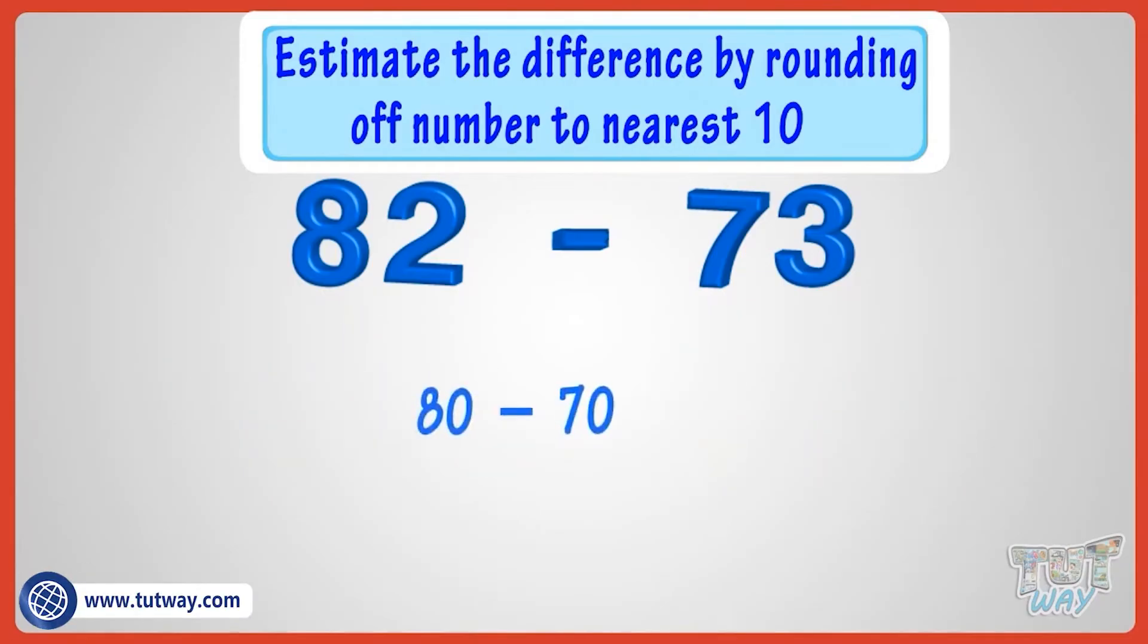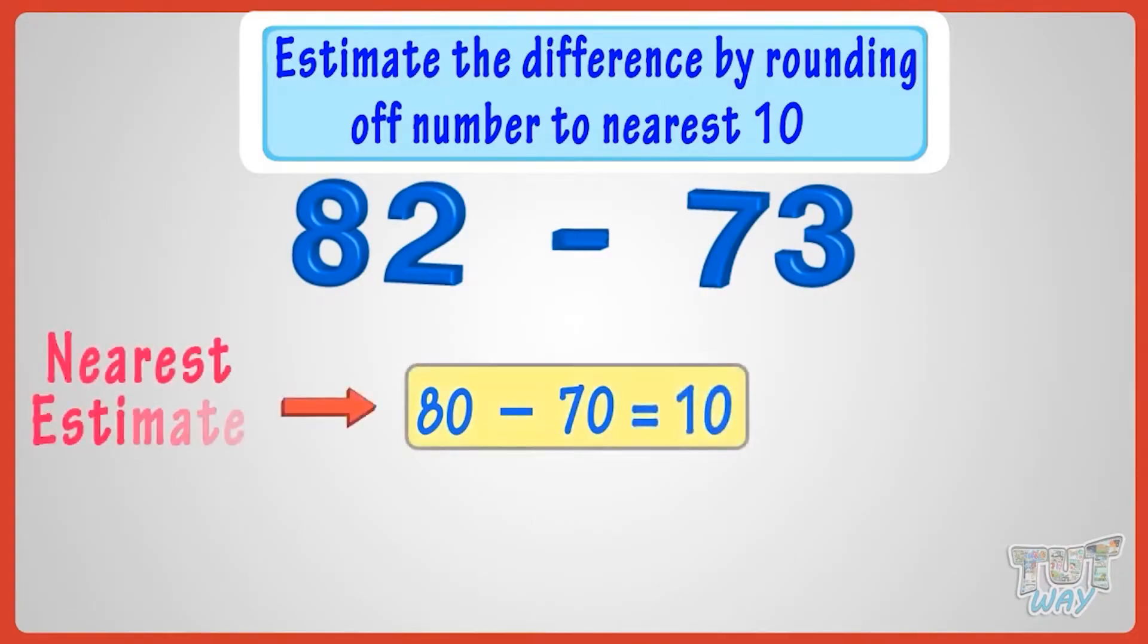Now subtract the rounded off figures to calculate the estimate. 80 minus 70, we will get 10. So the nearest estimate of 82 minus 73 is 10.